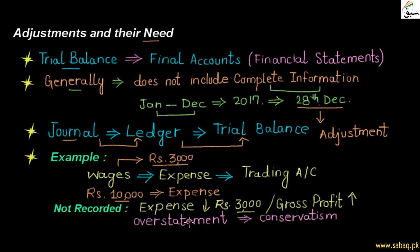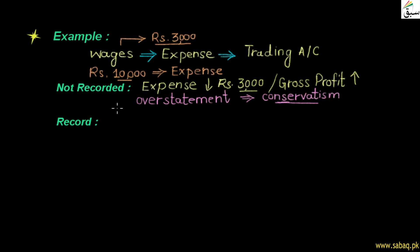The gross profit will show more — we call this overstatement. The conservative concept of accounting says that when we are making accounts, we cannot overstate our profits. We must try to record profits accurately. Since we have not recorded the Rs. 3,000 expense, we have to adjust it. If we do not adjust it, we are not following the principles and accounting concepts, so we must adjust it.